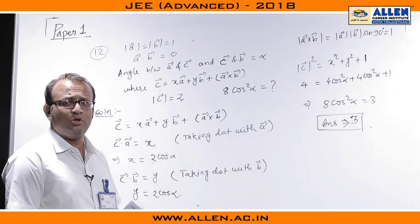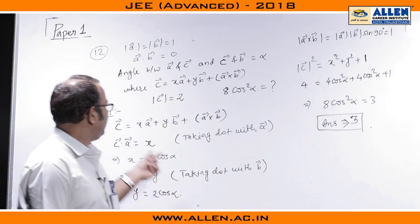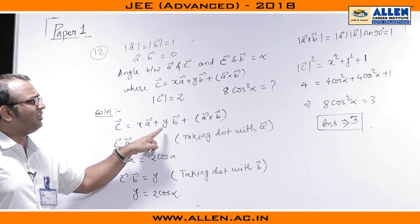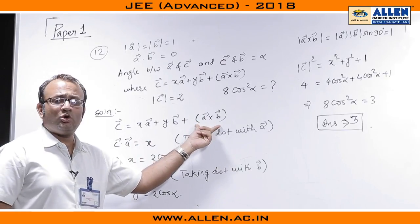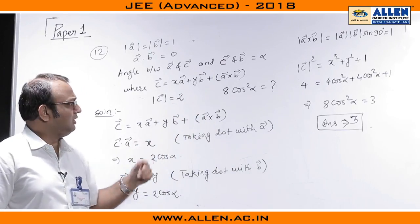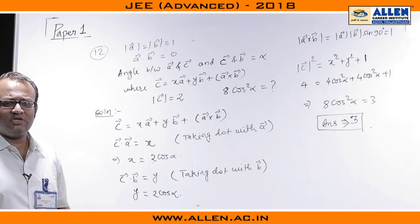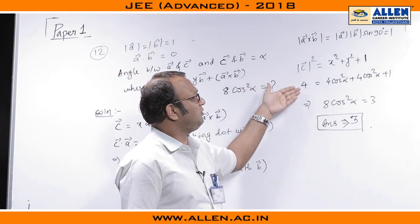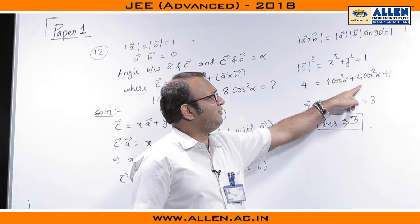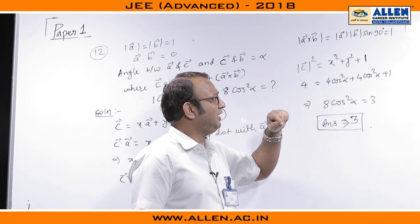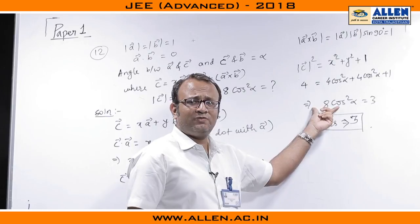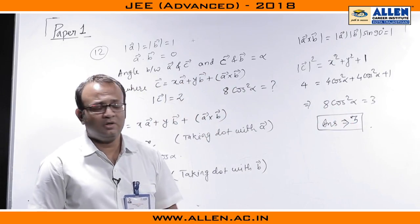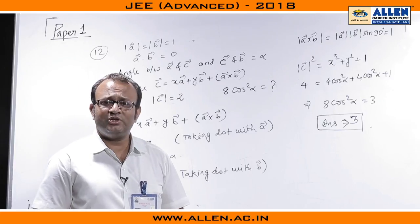So we have got modulus A cross B to be 1 and now we can just take the modulus square for this thing which is going to be X square plus Y square plus modulus A cross B whole squared which is going to be 1. Rest all the dot products are obviously 0 because the 3 vectors are orthogonal and therefore, mod C square is 4. This is 4 cos square alpha plus 4 cos square alpha plus 1 which gives us 8 cos square alpha equal to 3 and this is what precisely they have asked, the value of 8 cos square alpha and therefore, the answer is going to be 3.